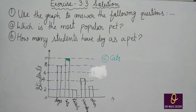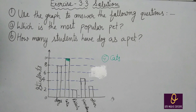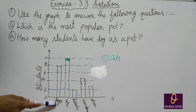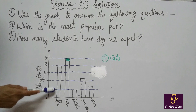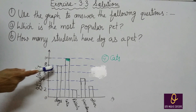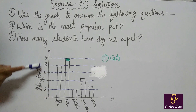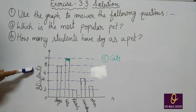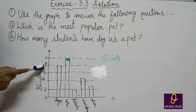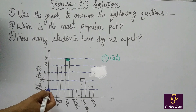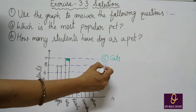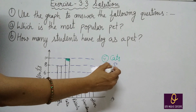Next: how many students have dog as a pet? कितने students के पास dog as a pet है? अब graph से देखिए, यह dog है. Dog के लिए students कितने हैं? Along y-axis आपको देखना है — यह 8 है. Dog कितने बच्चों के पास है? 8 बच्चों के पास है. तो यहाँ पर आप note कर देंगे: 8.